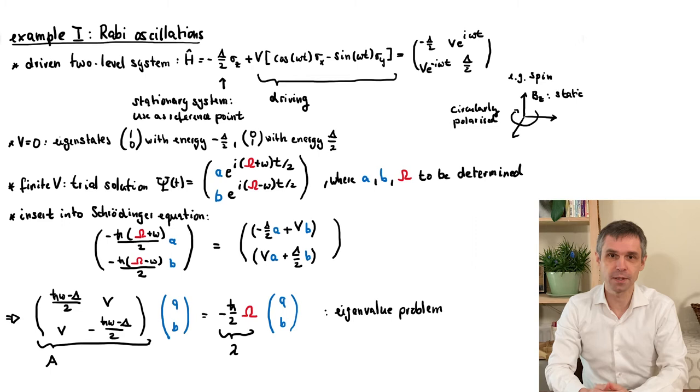The matrix A is real and symmetric, which is the special case of a Hermitian matrix. And so the eigenvalues, and hence also capital Omega, will be real, and the eigenvectors will be orthogonal to each other. And as this is a 2x2 matrix, we have exactly two eigenvalues and two eigenvectors, which will turn into the two special solutions that are advertised at the beginning.